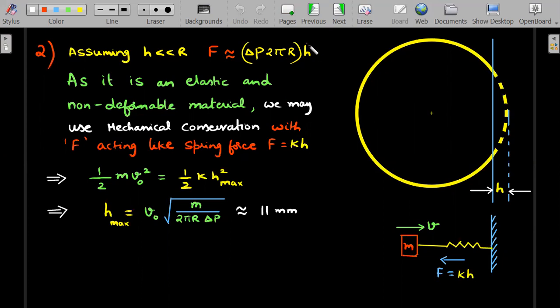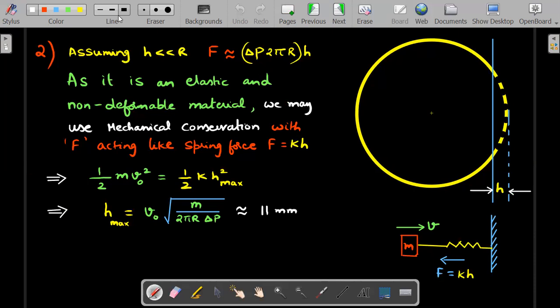Assuming h is very small, the expression from the first question gives 2R - h ≈ 2R. Therefore, I get a constant times h, where h becomes the compressing variable. As it is an elastic and non-deformable material, we may use mechanical energy conservation. F is like a constant times h, acting like a spring force. So ½mv₀² acting against a spring of constant k, where h_max is the maximum compression. The value of h_max upon substituting all the numbers comes out to be 11 mm, which is a very good assumption for R = 10 cm. That's a decent approximation.